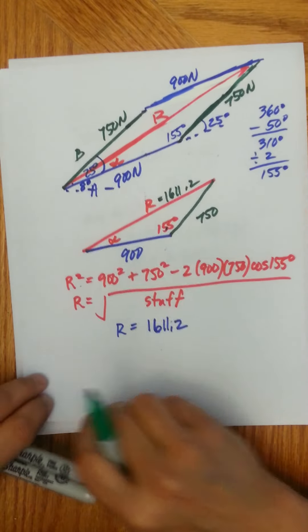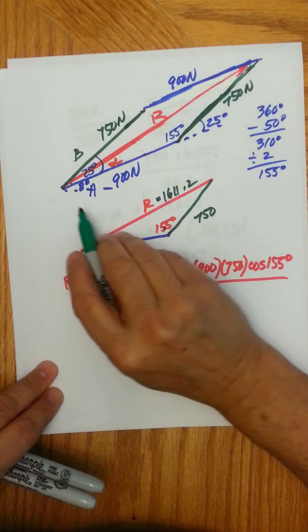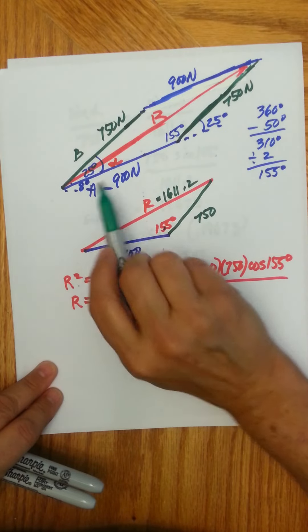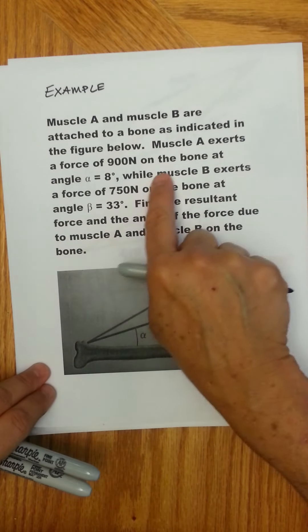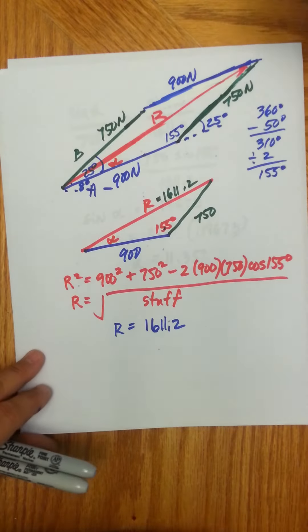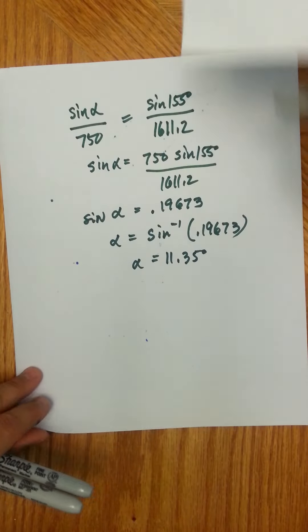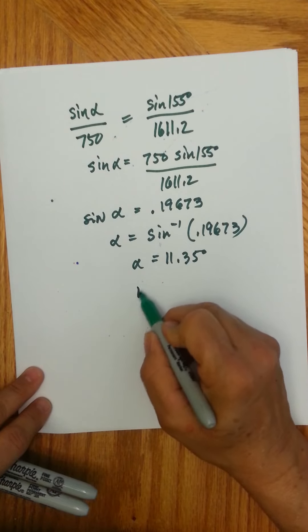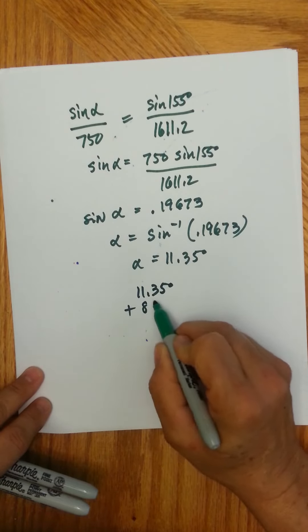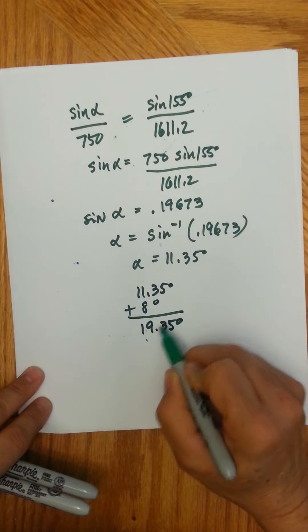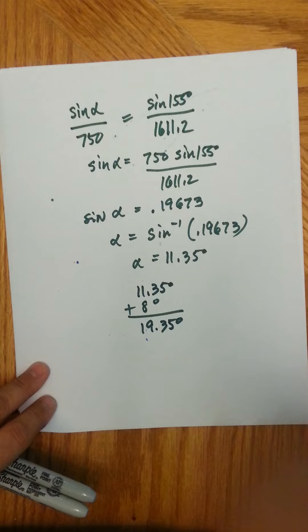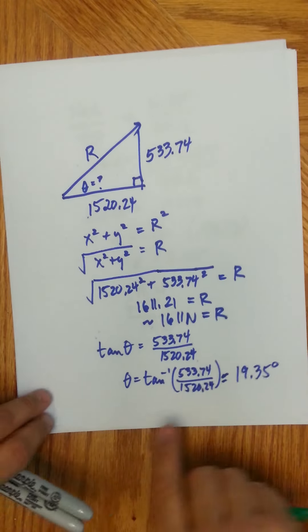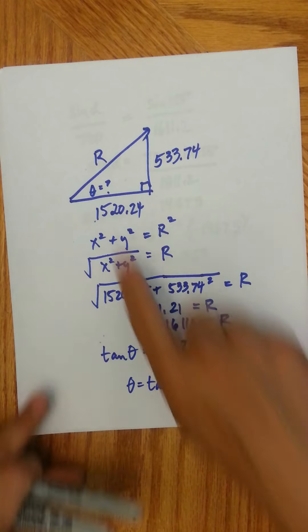Remember that alpha is the angle between the resultant and force A, but force A is already at 8 degrees from the horizontal. So if I add those two together — 11.35 degrees plus 8 degrees — I get 19.35 degrees. That tells us the resultant is at an angle of 19.35 degrees to the horizontal, which is exactly what we found using the right-triangle method.